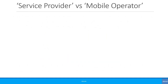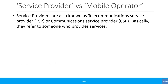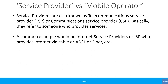First, we should clarify the difference between service providers or SP and mobile network operator or MNO. Service providers are also known as telecommunication service providers, TSP, or communication service providers, CSP. Basically, they refer to someone who provides services. A common example would be internet service providers or ISP who provide internet via cable, ADSL, fibre, etc.